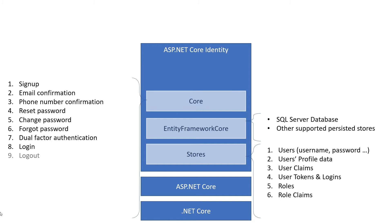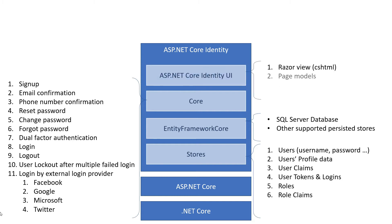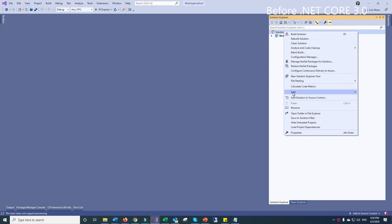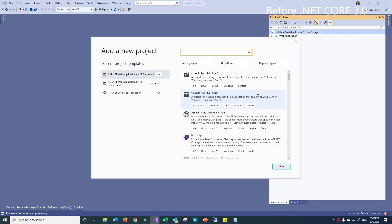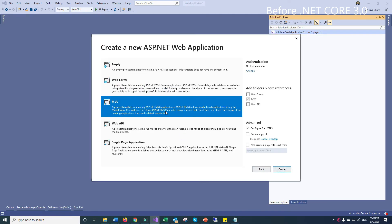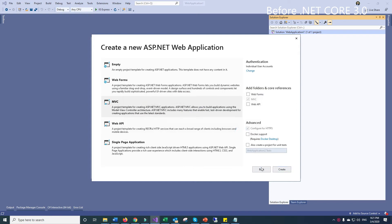On top of that, it has the core functionalities that you can see here in the list. The list contains the common functionalities that any modern application needs to implement. It also has the UI layer for the core functionalities. Before .NET Core 3, the UI was part of the Visual Studio template for web applications, and the created project would contain an account controller, Razor views, and models within your project.